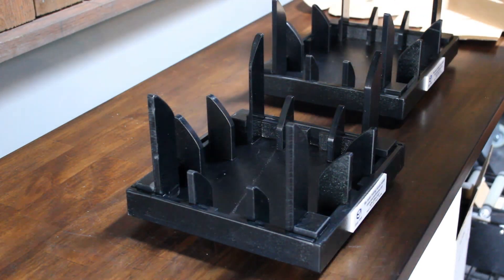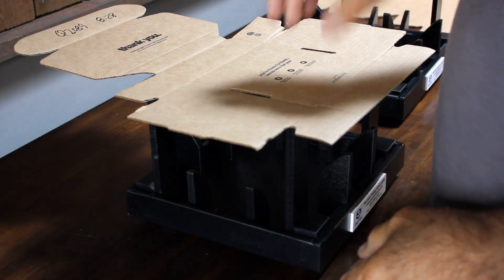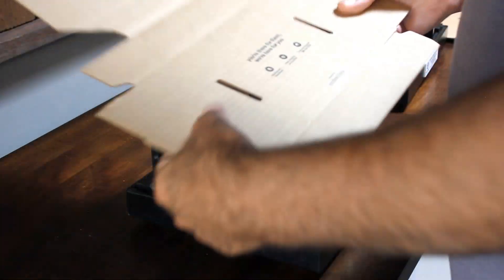Two-part process. You're going to take the box and set it into the fixture, then you're going to press it down and make your fold. So it's going to go something like this.